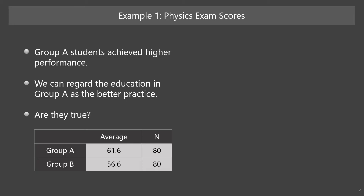So, group A is higher than group B by 5 points. Based on this data, I conclude that group A students achieved higher performance, and that we can regard the education in group A as the better practice.